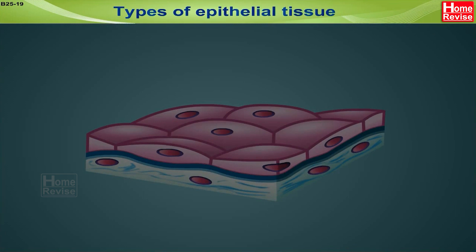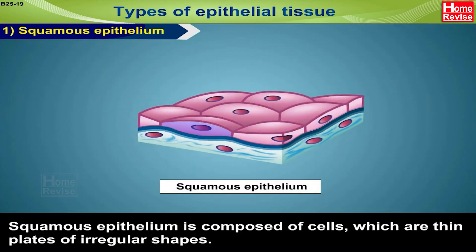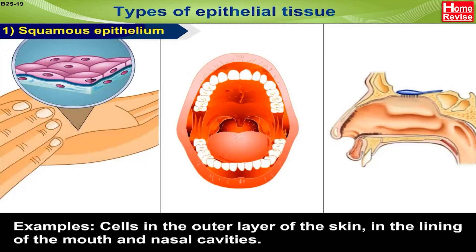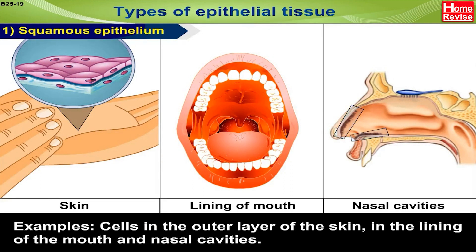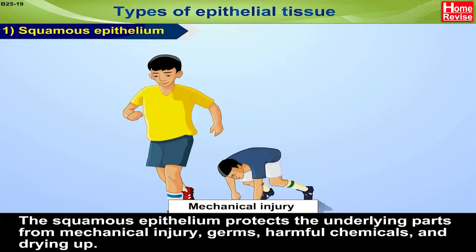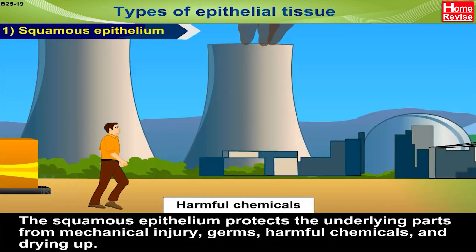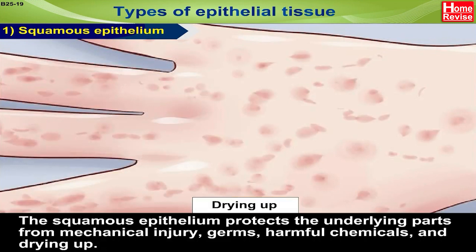Types of Epithelial Tissue. 1. Squamous Epithelium: Squamous epithelium is composed of cells which are thin plates of irregular shapes. Examples include cells in the outer layer of the skin and in the lining of the mouth and nasal cavities. The squamous epithelium protects the underlying parts from mechanical injury, germs, harmful chemicals and drying up.